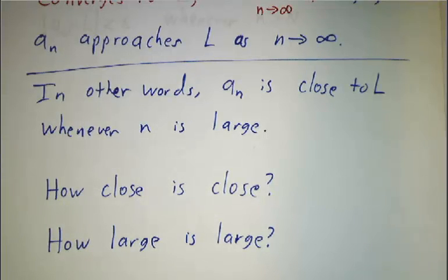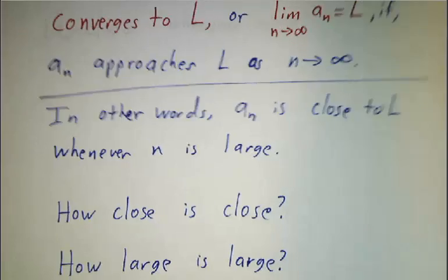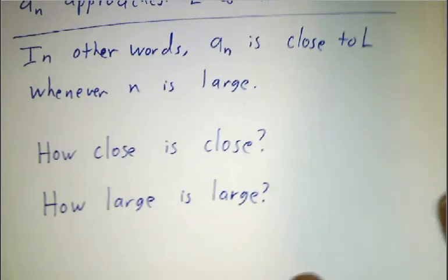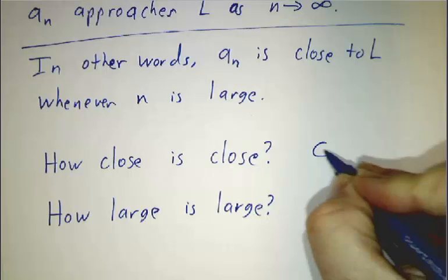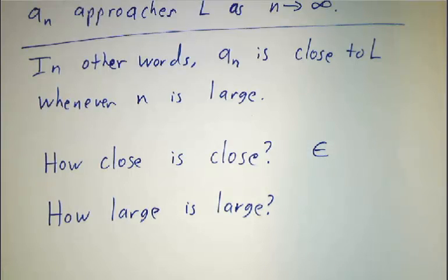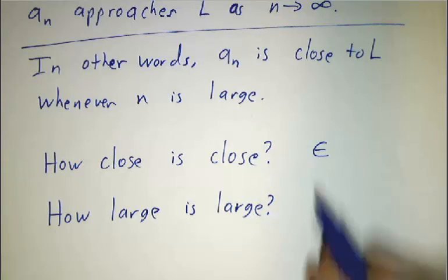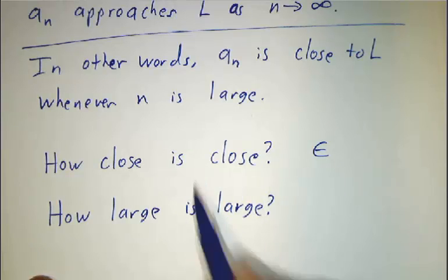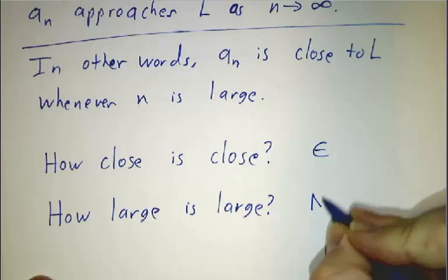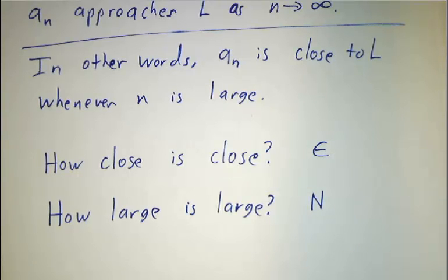So we're going to refine this rough definition and make a precise definition. How close is close? We use the Greek letter epsilon to signify how close we want to get. So whenever you see an epsilon, think: this is how close we need to get. And how large is large? We're going to denote it with the letter N.